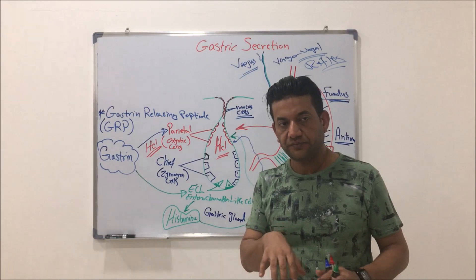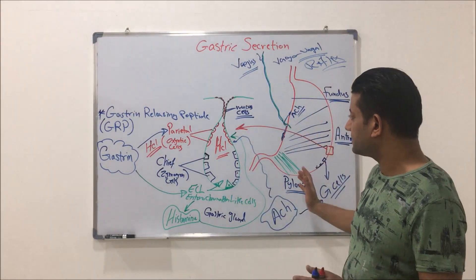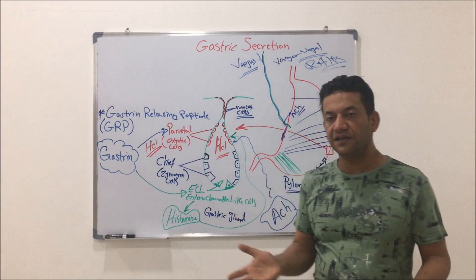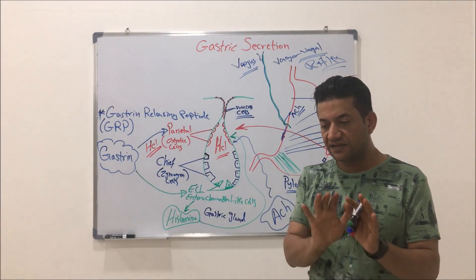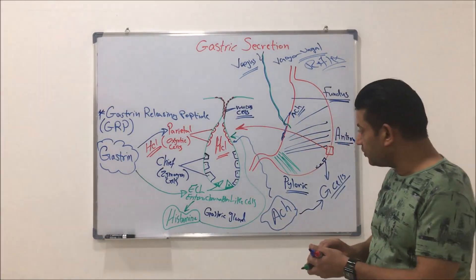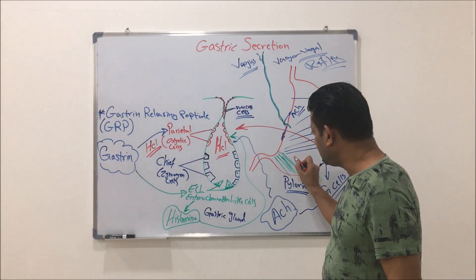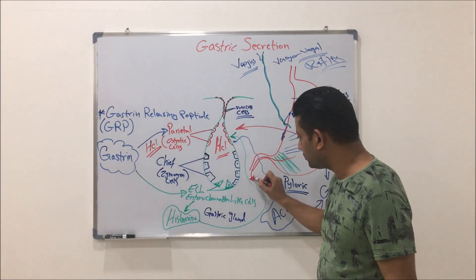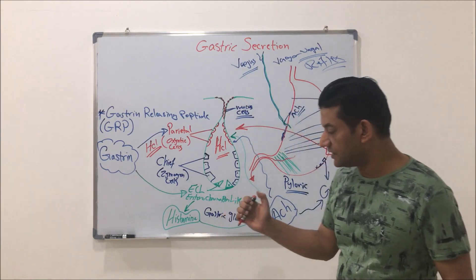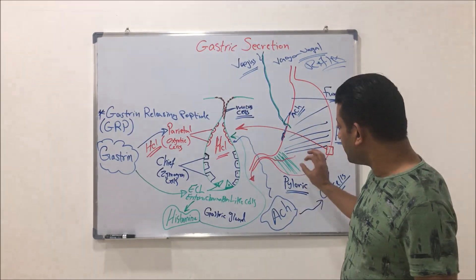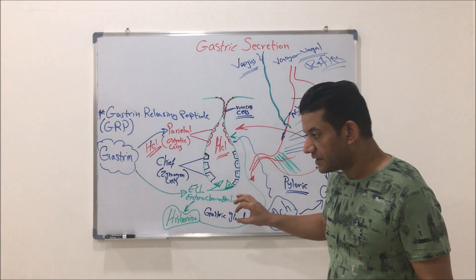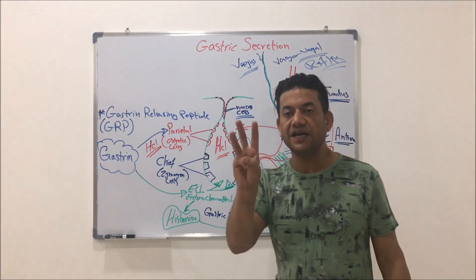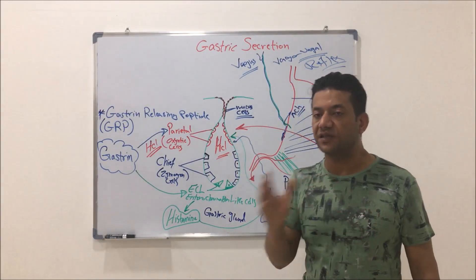After that, this phase — which is the gastric phase — has finished. Now the food will leave the stomach and go to the small intestine. At the moment of leaving the stomach, there will be the start of the third phase, which is the intestinal phase.